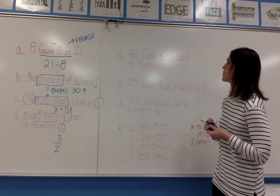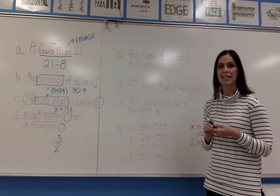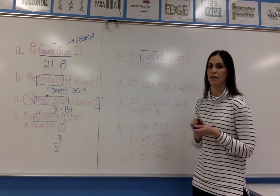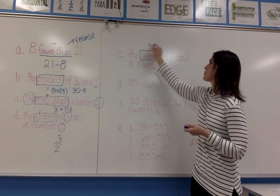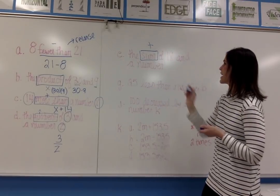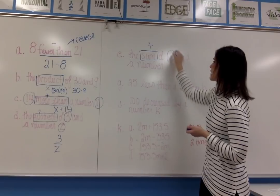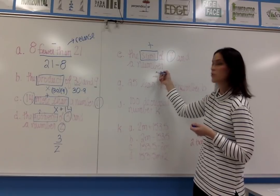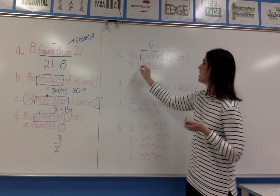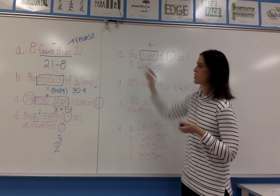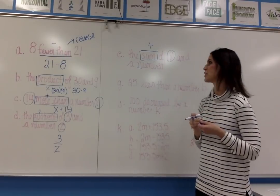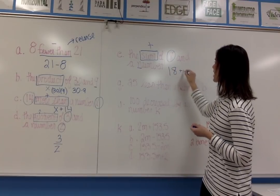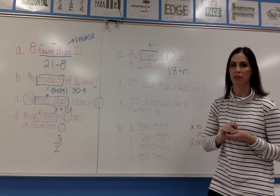Our next example says the sum of 18 and a number. My clue word is sum, which means to add. It has 18 and a number, but they don't give you a specific variable, so you can use any variable. I typically use N because the word number begins with N. So it's 18 plus N.